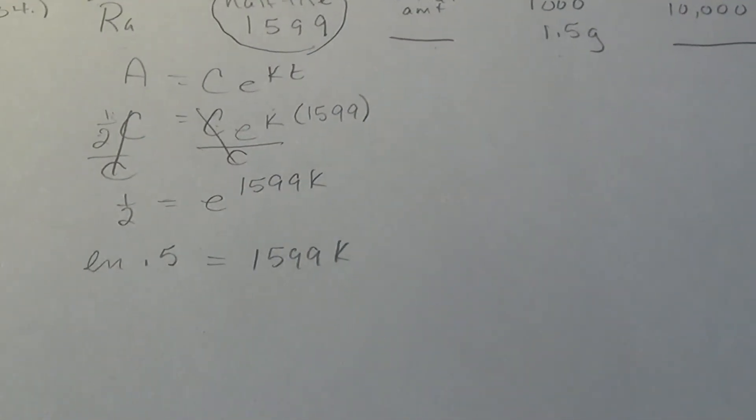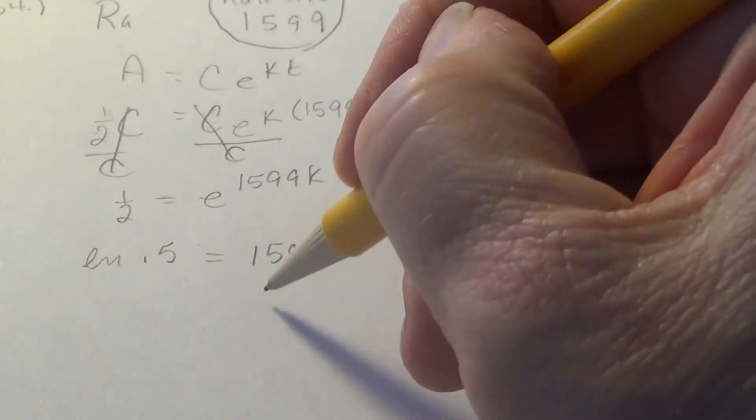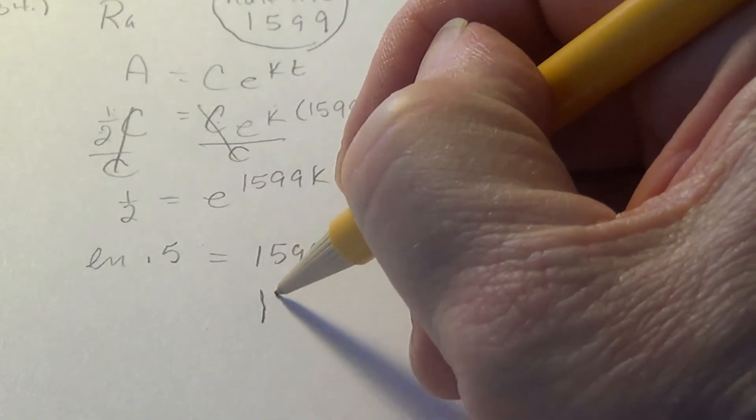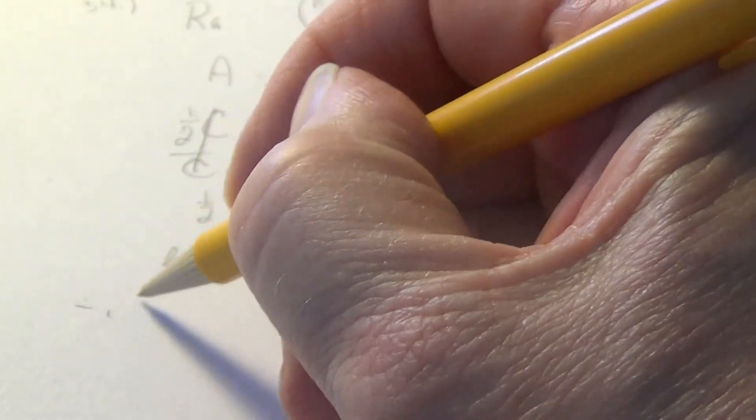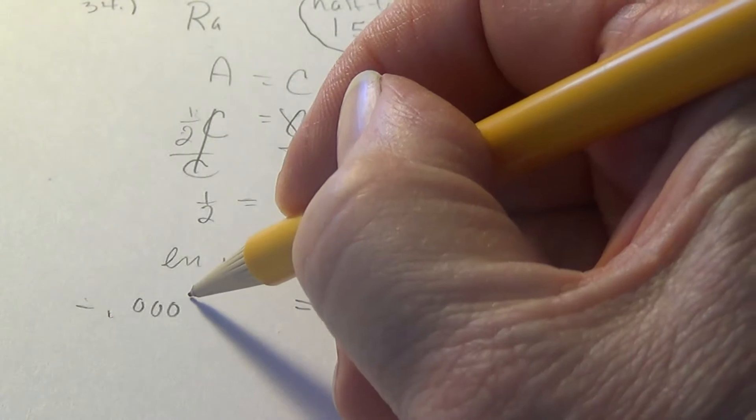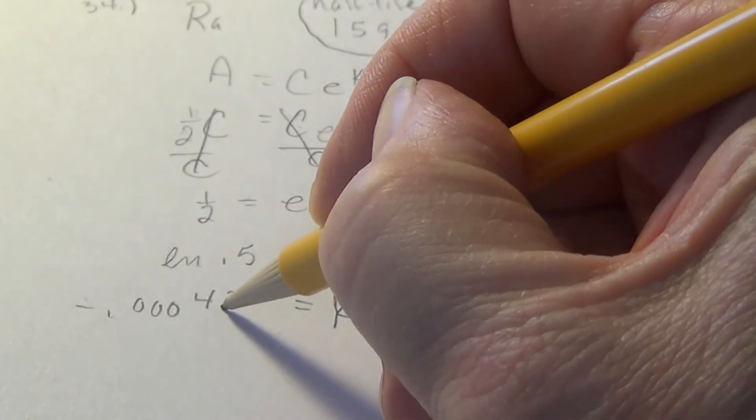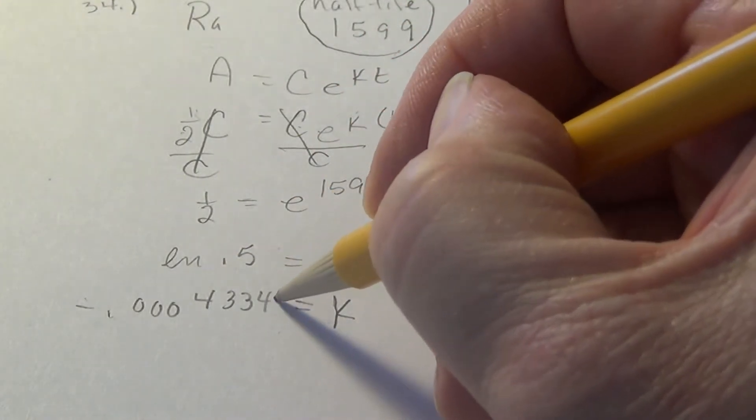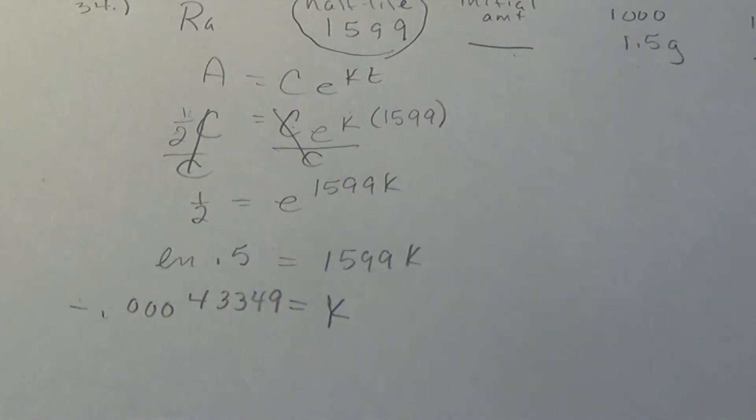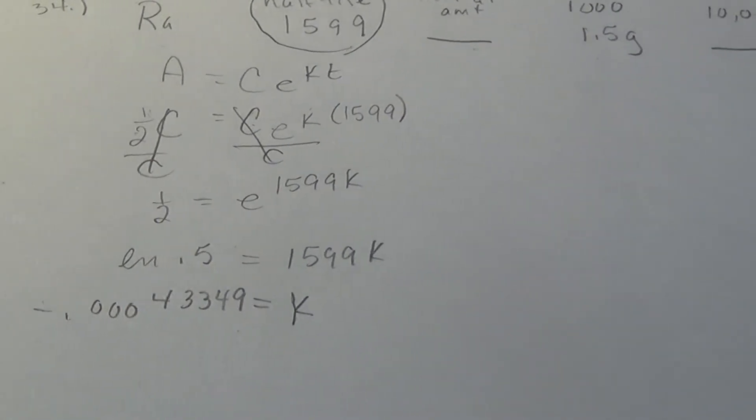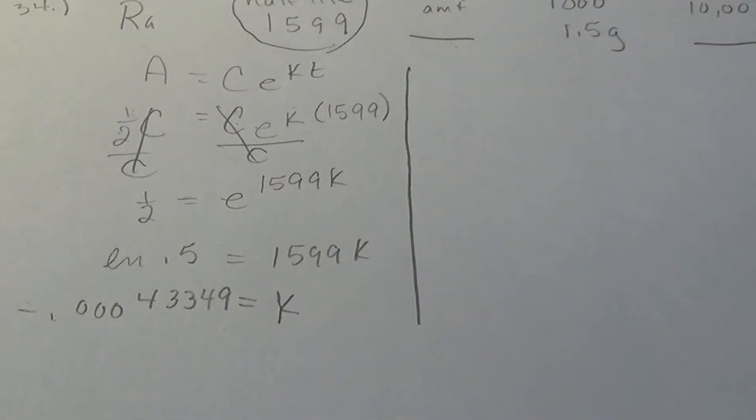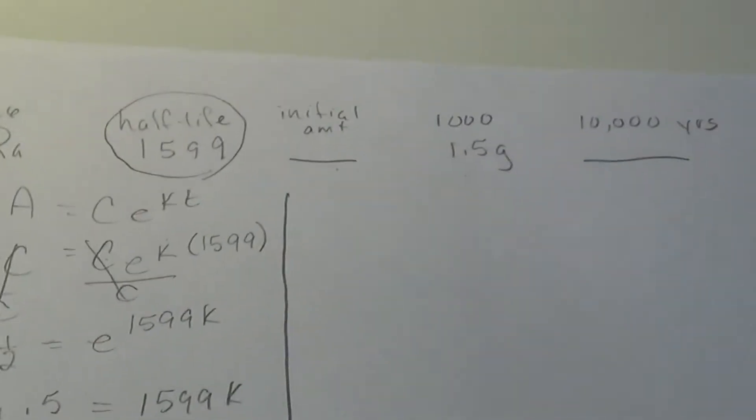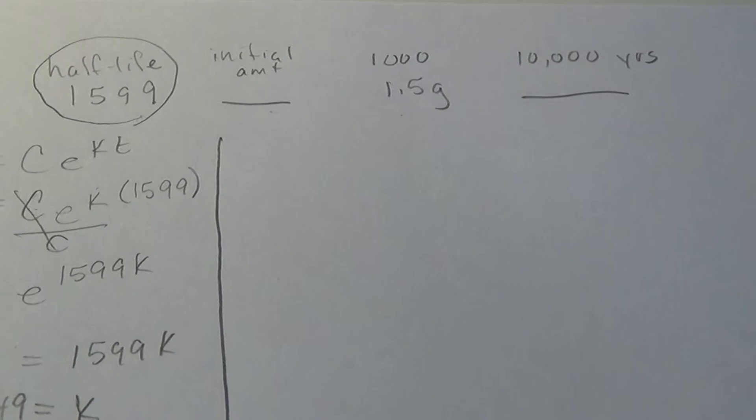And then when we divide both sides by 1599, we get K equals a very small number, like these are often negative 0.000, three of them there, 43349. So I put in as many as I can, almost. All right, so at least we got a K, but it doesn't get us to finding either the initial amount or the amount at 10,000 years.